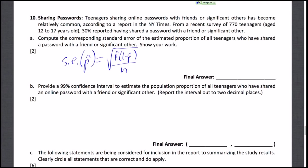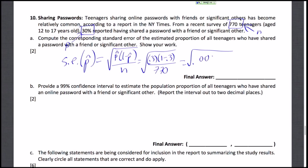We just have to figure out our p-hat and our n. The p-hat we're given — the sample proportion is 30%, so 0.3. And then our n — we sampled 770 teenagers. We plug those values in: we have 0.3 times (1 minus 0.3) over 770, all under the square root. If we calculate this out and take the square root, we get about 0.0165. And that's our final answer.